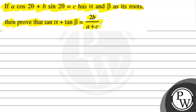Humein given hai ki agar A cos 2θ plus B sin 2θ equal hai C ke, aur alpha aur beta ke roots se tumko prove karna hai ki tan alpha plus tan beta equal aayega 2B divided by A plus C.